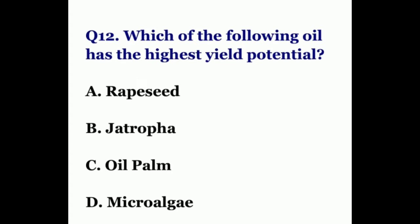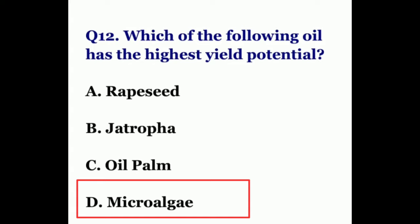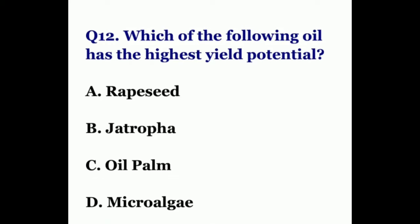Question twelve: which of the following oils has the highest yield potential? The options are rapeseed, Jatropha, oil palm, or microalgae. The correct answer is microalgae. Microalgae is estimated to produce 47.5 to 142.5 kilolitres of oil per hectare, compared to 1.2 to 6.0 kilolitres per hectare for oil palm, Jatropha, canola, and rapeseed.